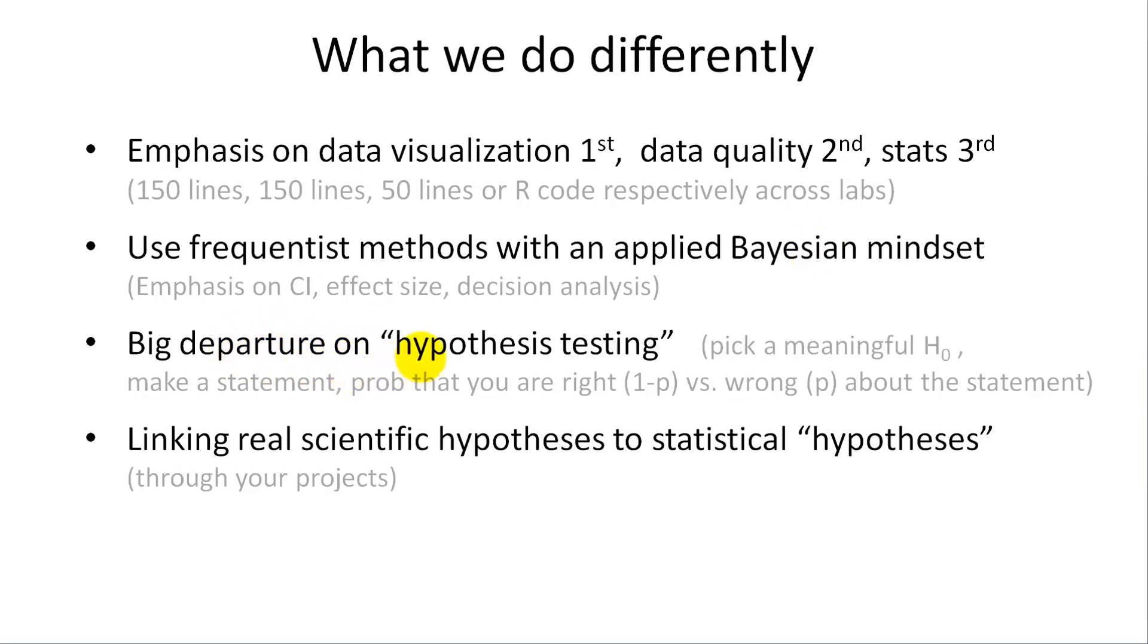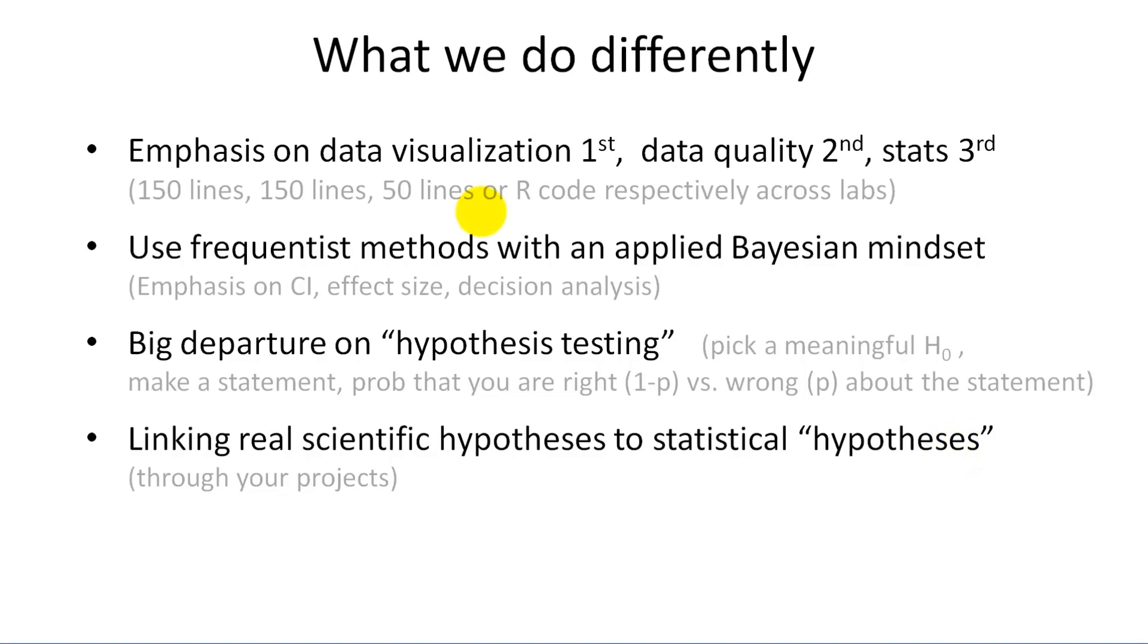Another big departure we will take is on classical null hypothesis testing. We rarely will be satisfied with the classical H0 expectation that there is no difference because nobody cares. We'll pick a meaningful null hypothesis, then make a statement about something in the world. Then we calculate probabilities that you're right about that, which would be one minus the p-value, versus wrong about it, which is the p-value. That's a different take on the p-value than you usually get, but it is the right way to think about it. The last thing we want to practice through your projects is linking real scientific hypotheses to statistical hypotheses. What I mean by that exactly I'll explain in the next video.